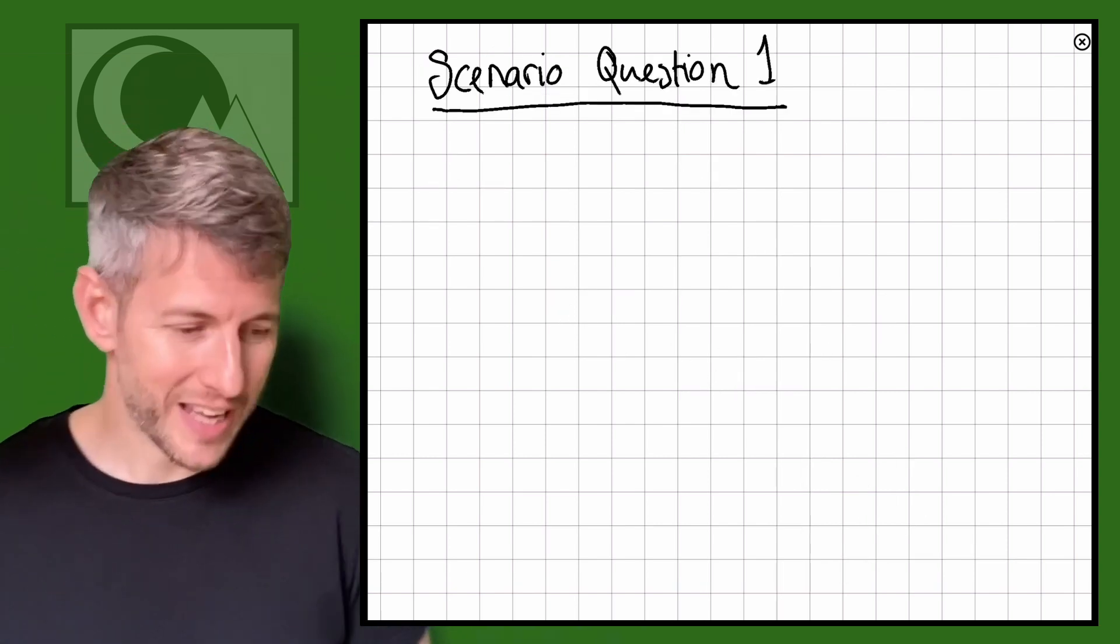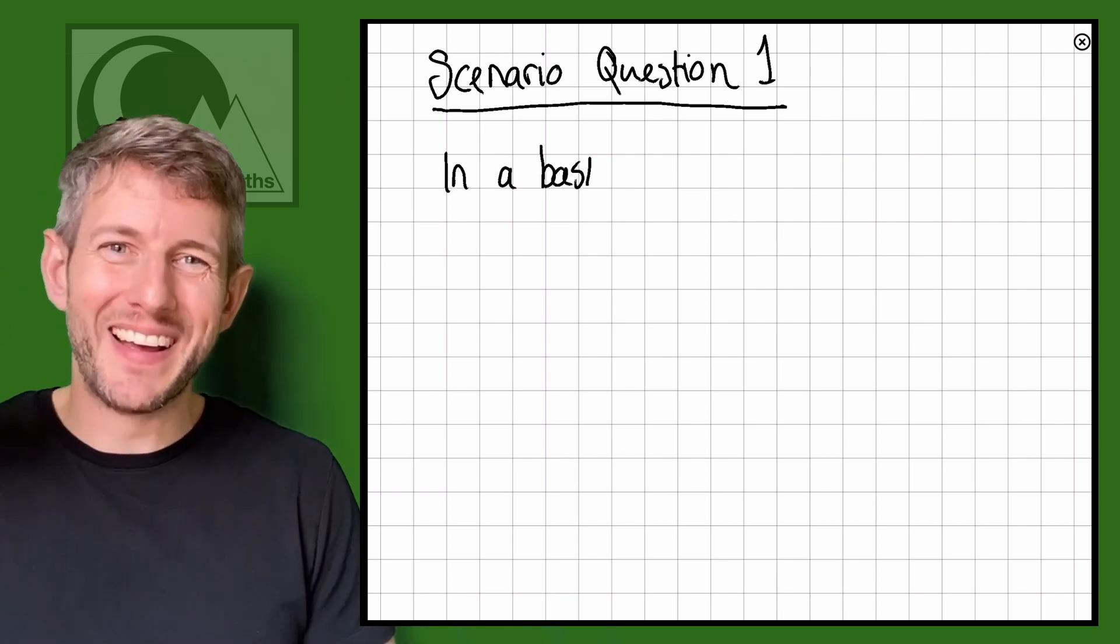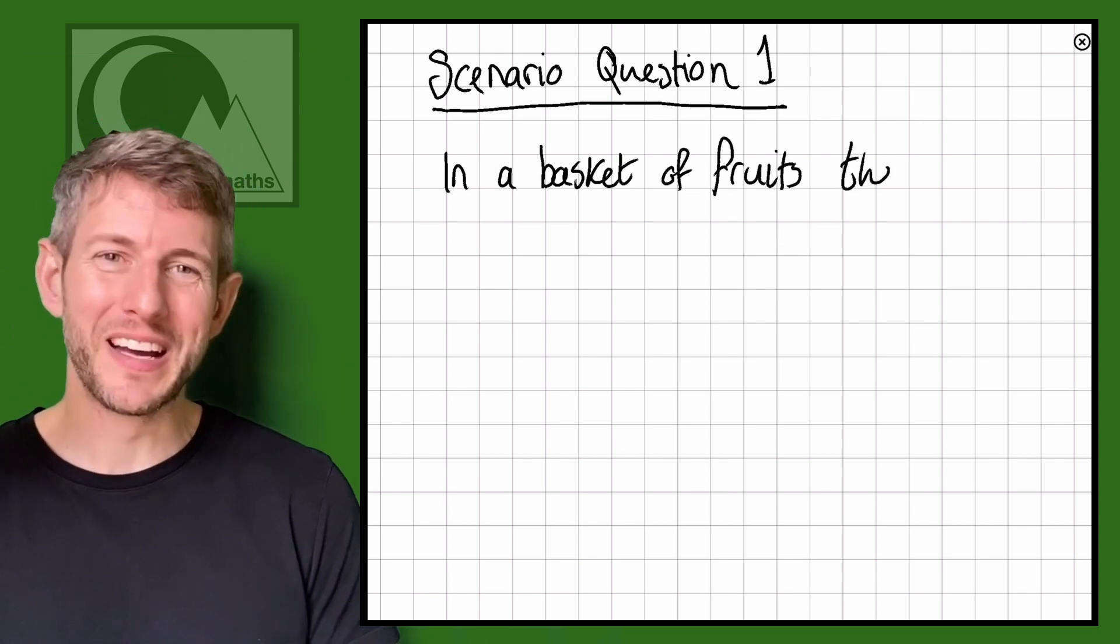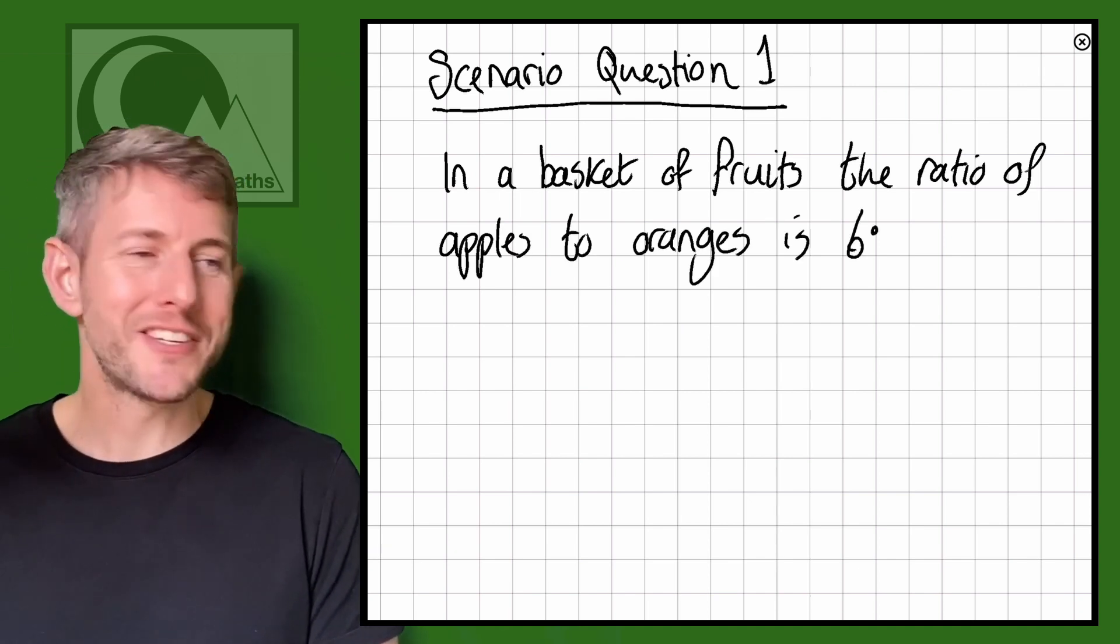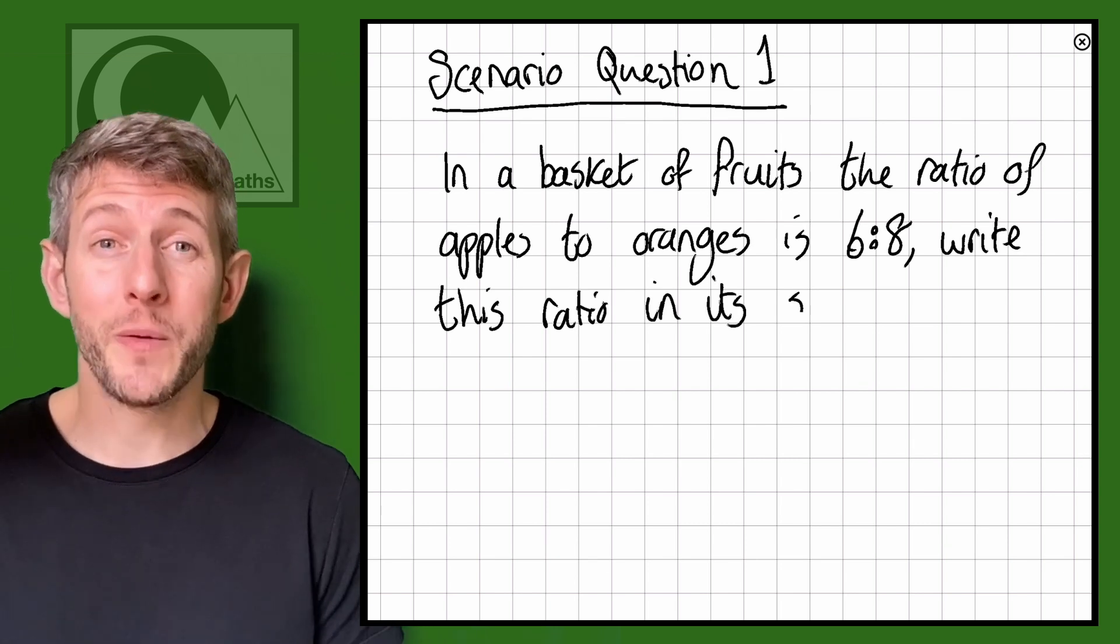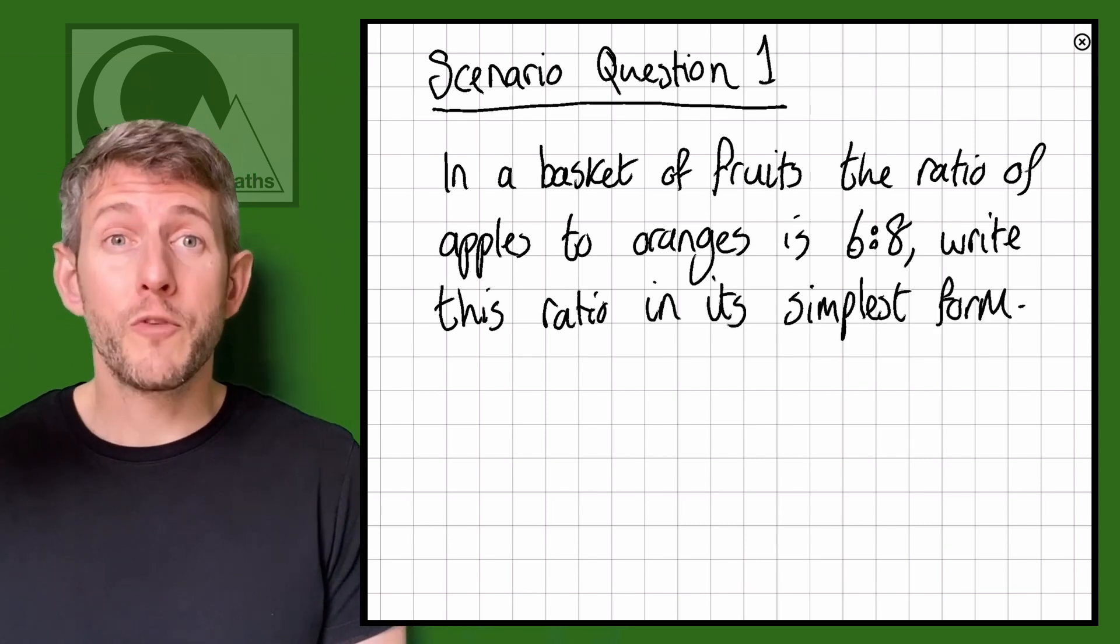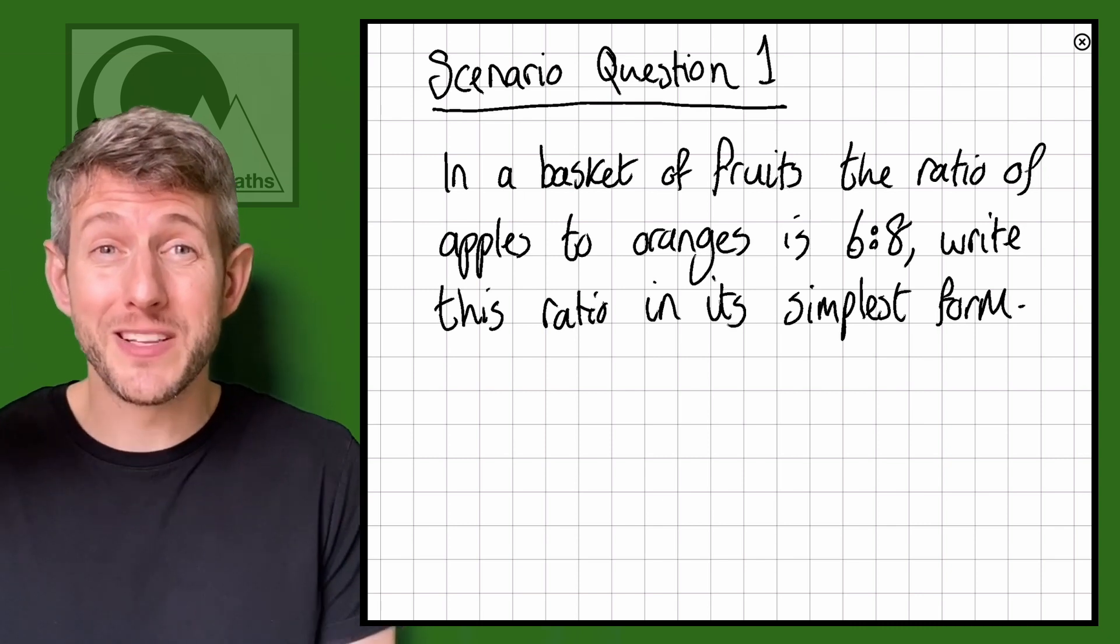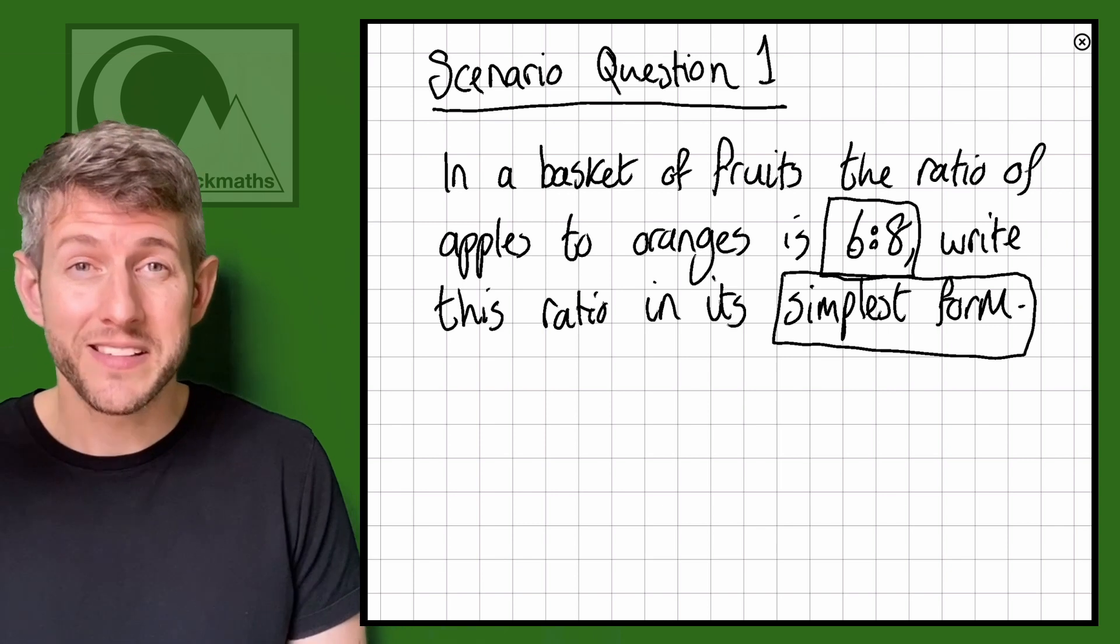Let's have a look at the scenario question. The scenario questions are actually okay with this one, it's just quite basic. In a basket of fruits the ratio of apples to oranges is 6 to 8. Write this ratio in its simplest form. You've got to pick out the question from that. I know there's a lot of text there, but the question is write 6 to 8 in its simplest form.